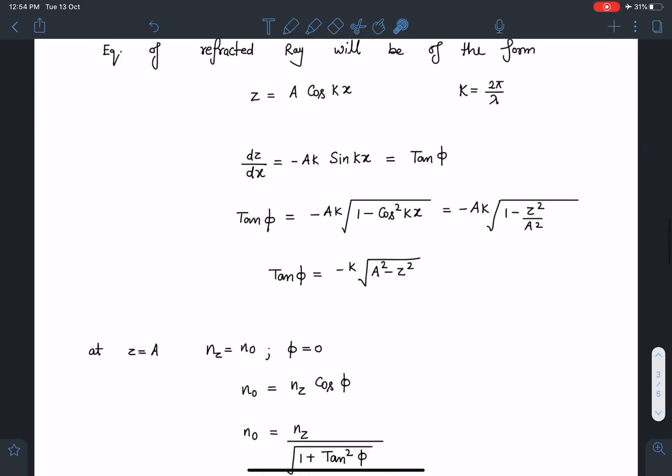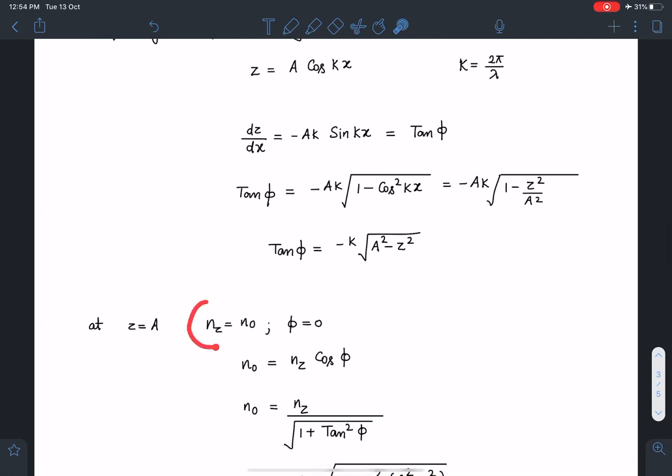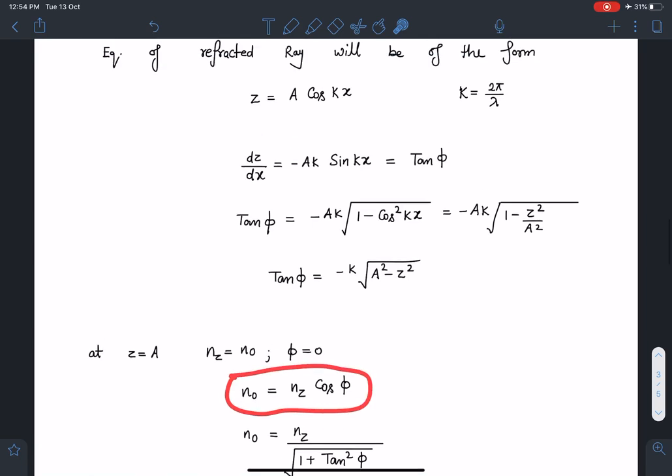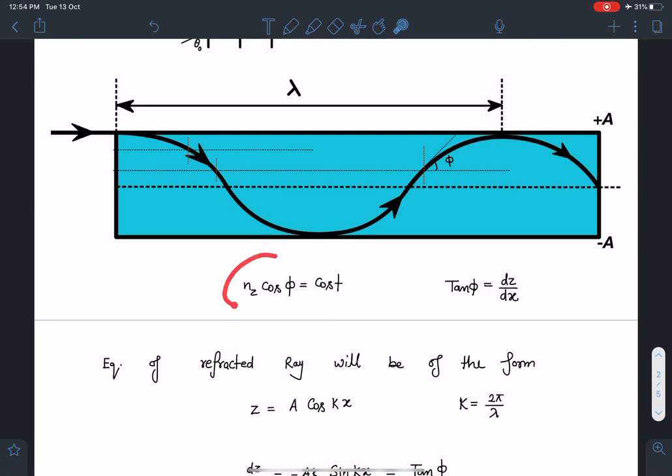Now at z equal to a we have refractive index value as n0 and this phi is 0 because slope of tangent is 0 at that point. So tan phi is 0 in that case. So I can write here general equation, n0 cos phi. This is my law, Snell's law, nz cos phi.